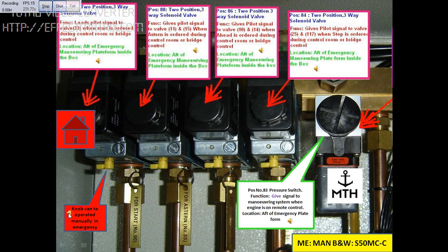In case there is a malfunction of these solenoid valves number 90, 88, 86, and 84, that is there is an electrical malfunction and the solenoid valve is not working, these valves can be operated by a knob provided on these blocks which is shown in the picture.